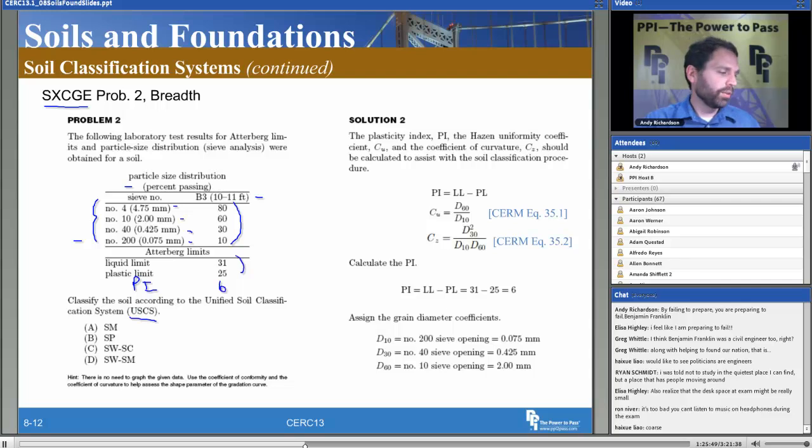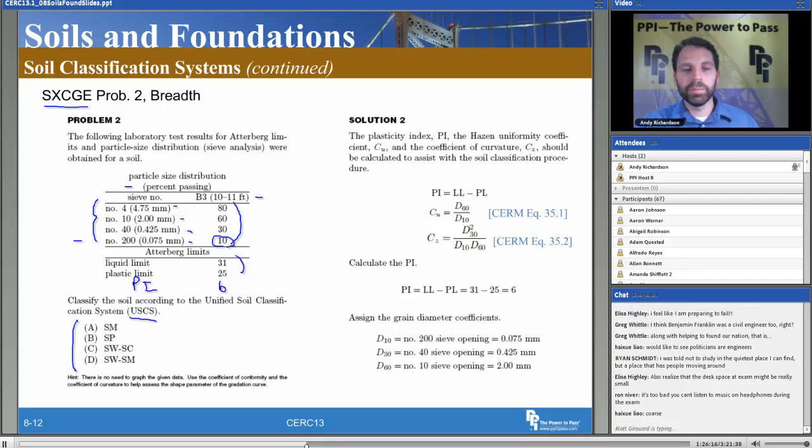Of course we know that since 10% passes the number 200 sieve, everything else is larger than that. 90% is coarser than number 200 sieve. So are we coarse or fine? Okay, Howie says coarse. I would agree with that. So actually, let's take a look at our multiple choice. That would actually tell us we're coarse—they all begin with an S: SM, SP, SW, SC, SW-SM. So we could have said that anyway based on our multiple choice, but we know that of course because 90% is greater than the number 200 sieve.